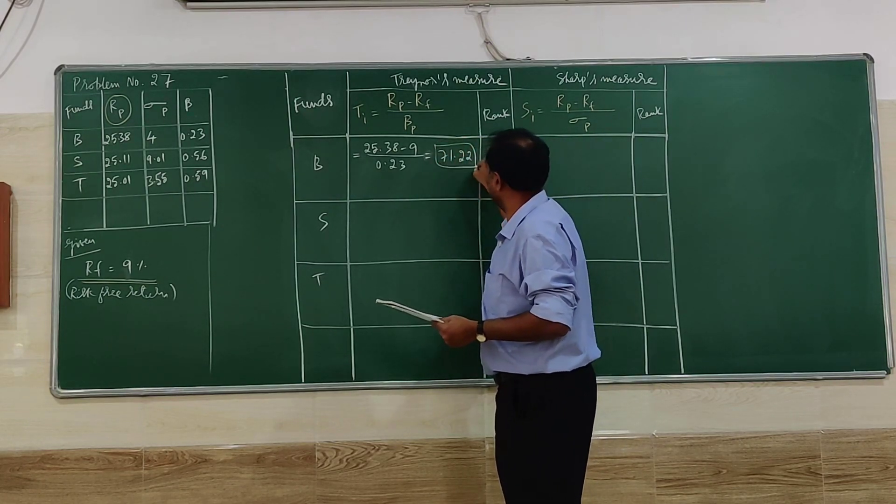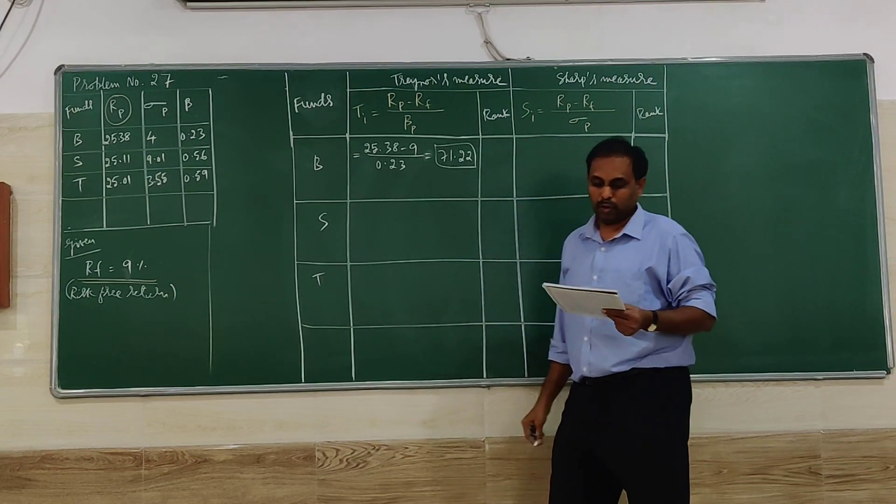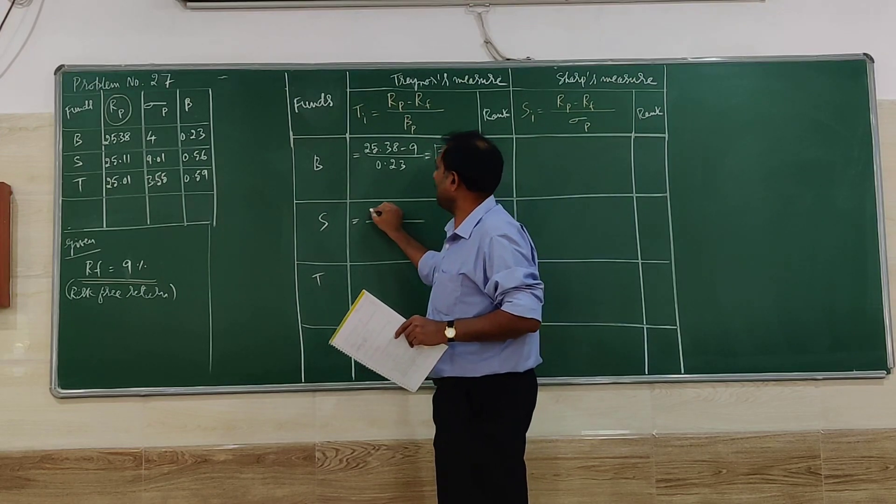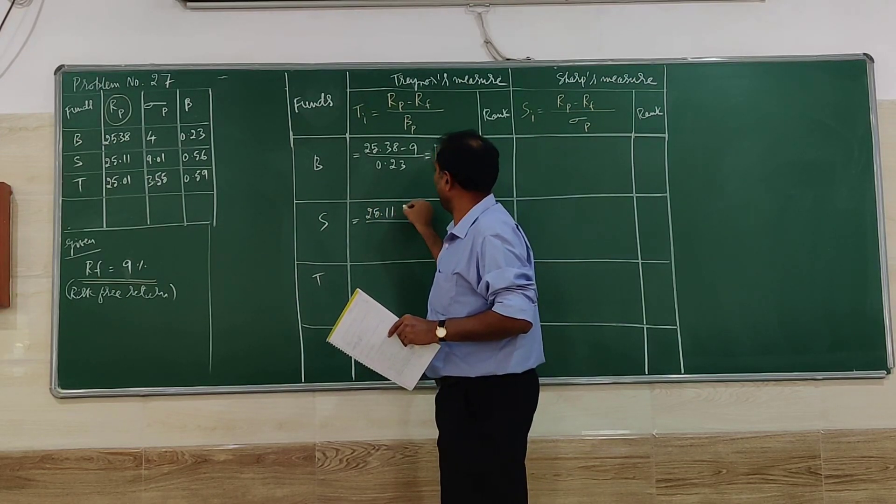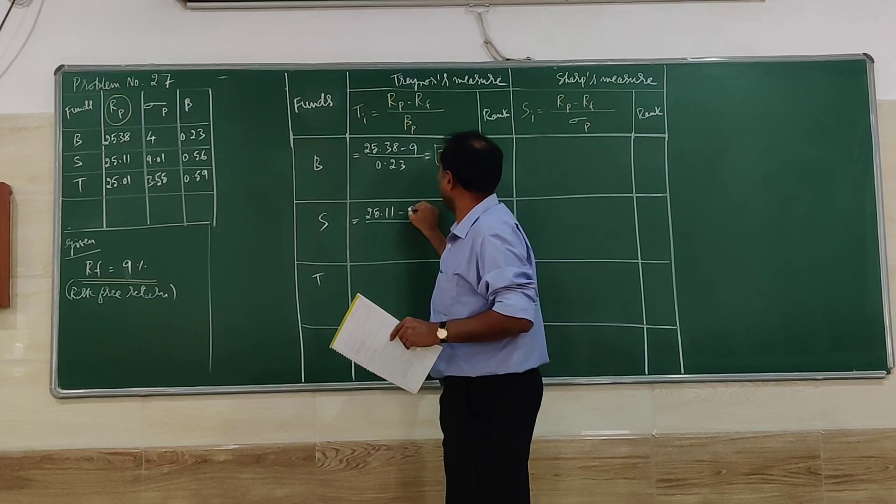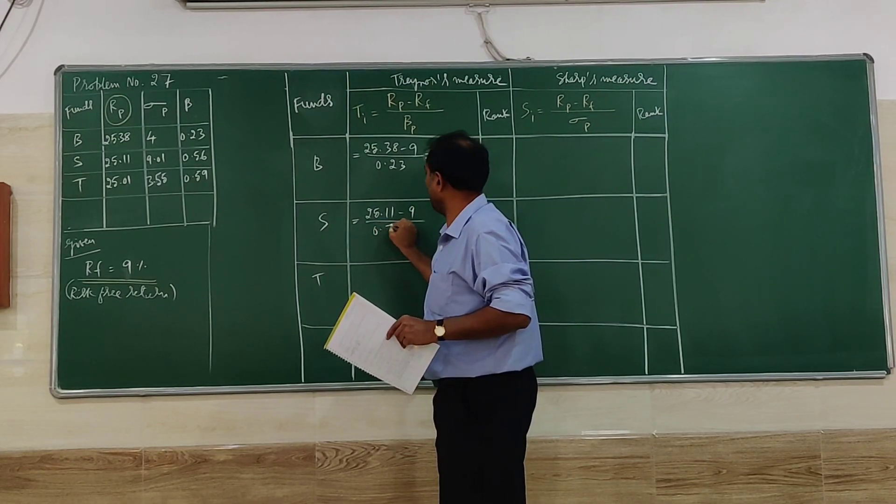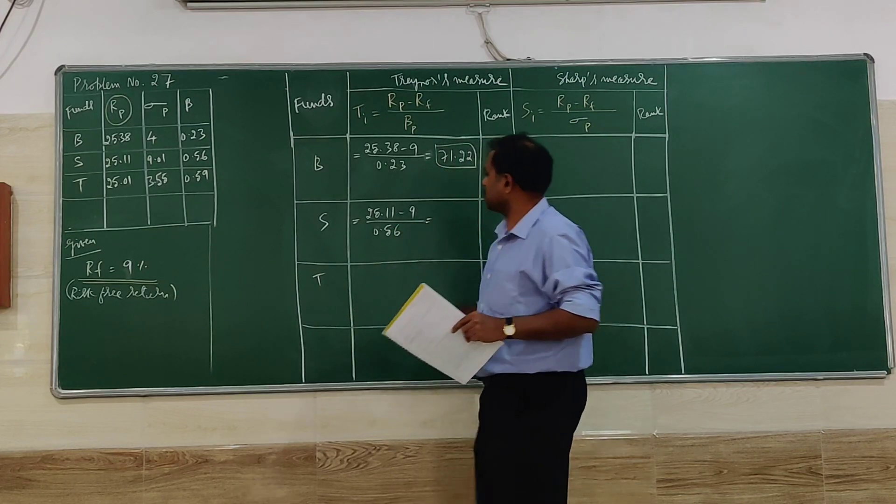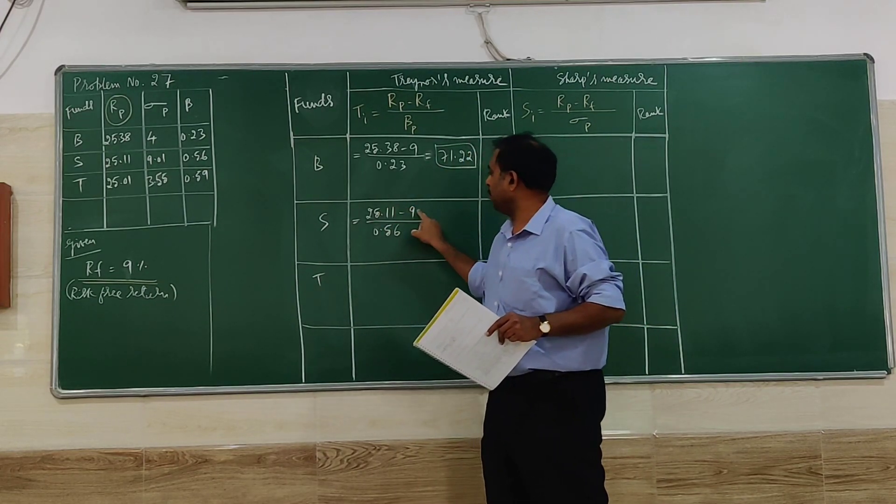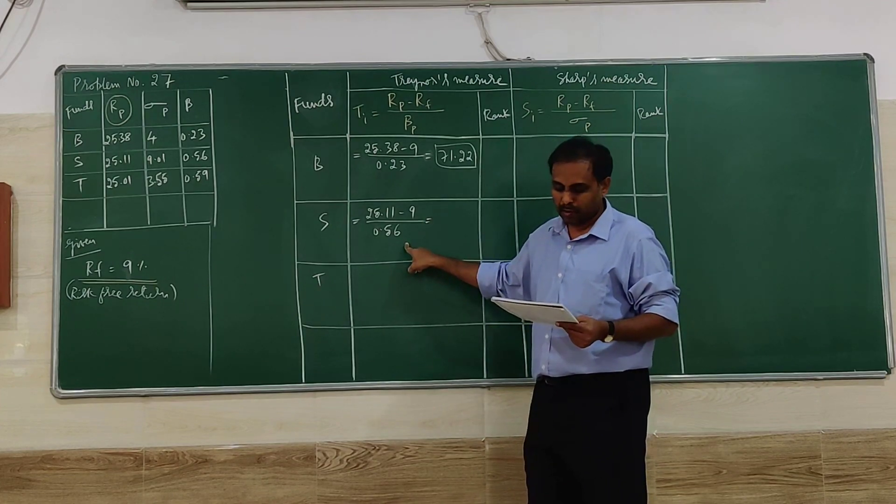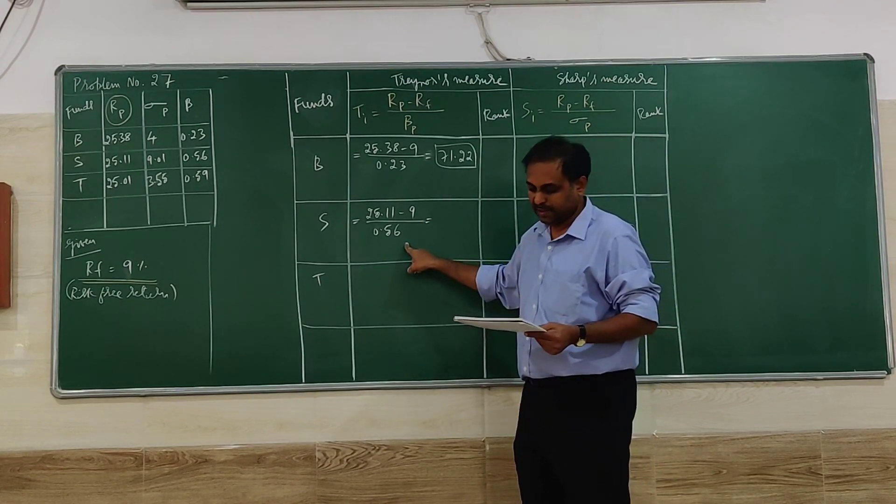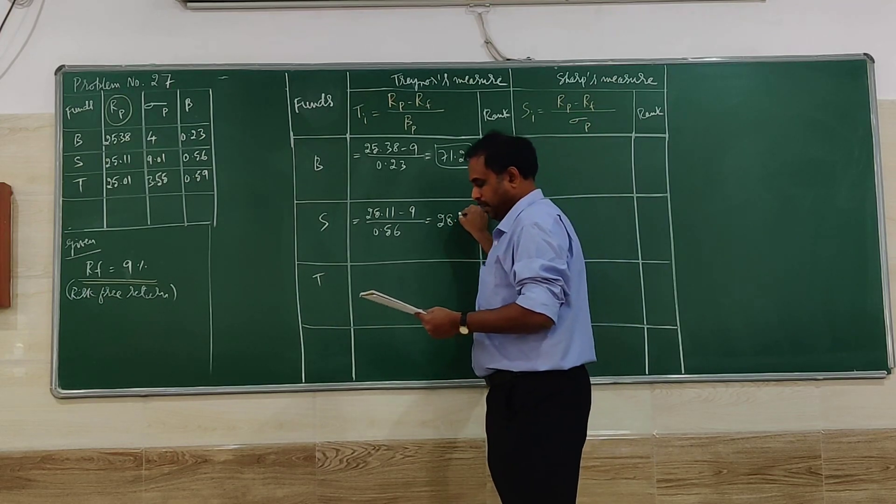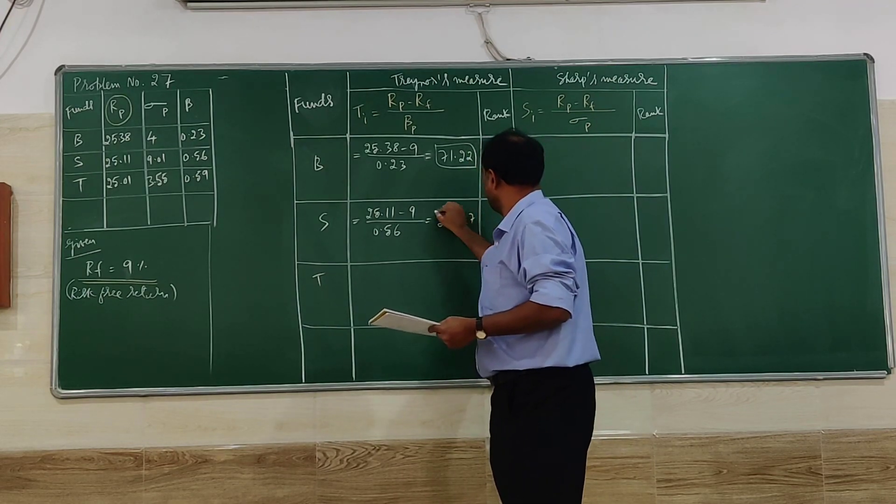Next, we move to the second one. rp is 25.11, rf is 9, beta is 0.56. So 25.11 minus 9 divided by 0.56 will give 28.77.